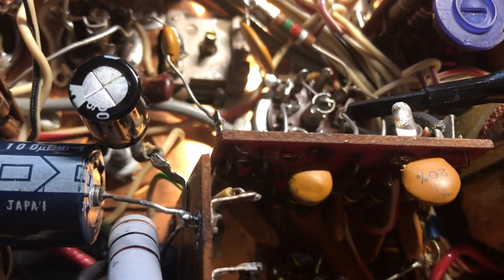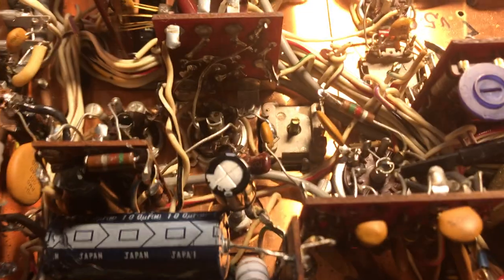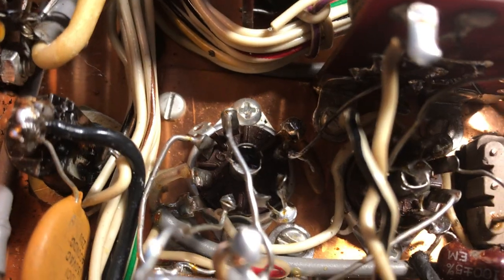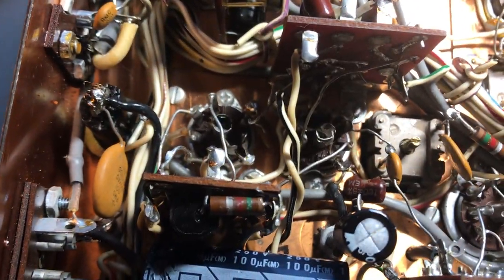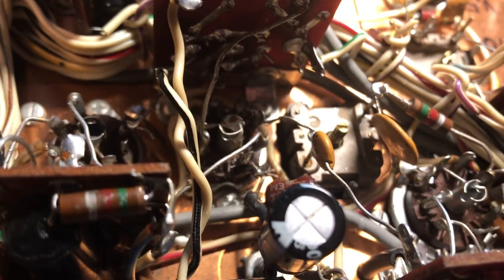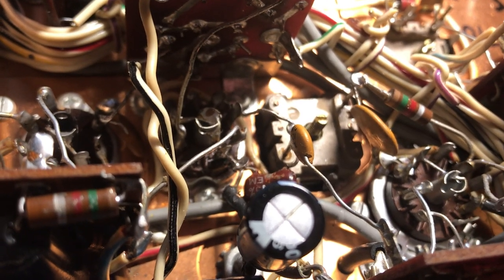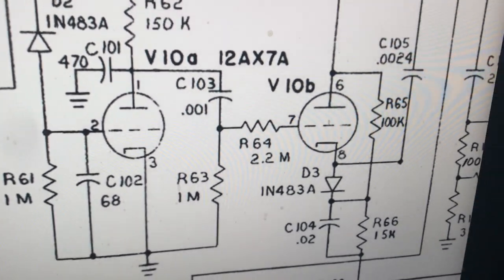Let's take a look at the grid here on pin 7 on V10B. I'm not sure how much my scope will load this stuff, but pin 7 on V10B. One, two, three, four, five, six, seven, right here. There's V10B pin 7 right there.